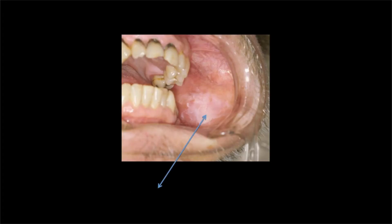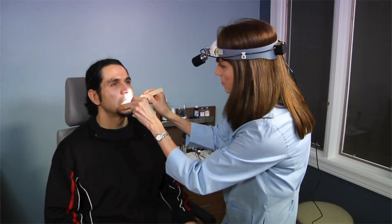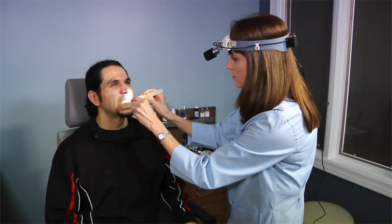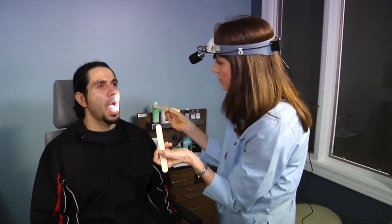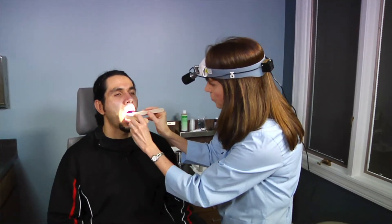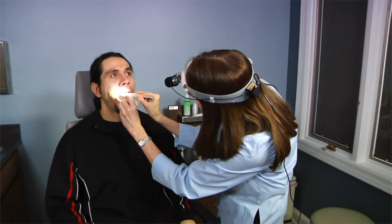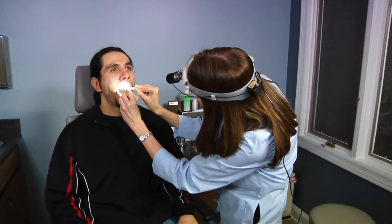A common abnormality in the buccal mucosa is white plaque-like lesions, which often represent leukoplakia. When examining the oral cavity and tongue, a gentle touch is required. It is important to insert the tongue blade slowly and avoid touching the base of the tongue. In children, a tongue blade is often not needed if you have them breathe through their mouth.